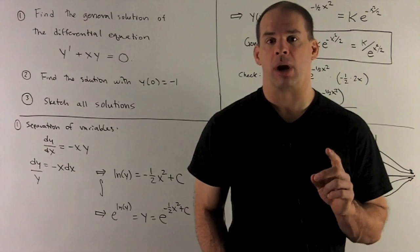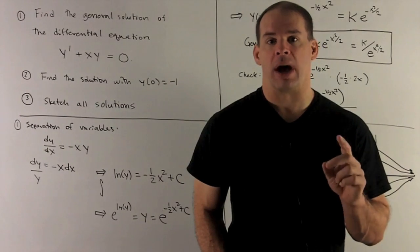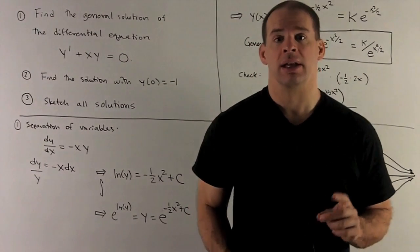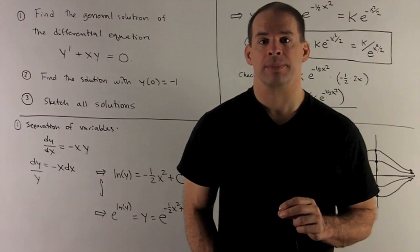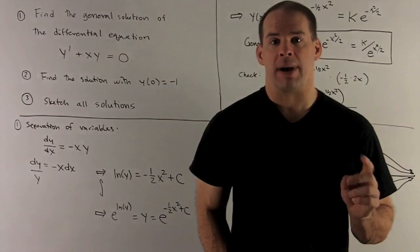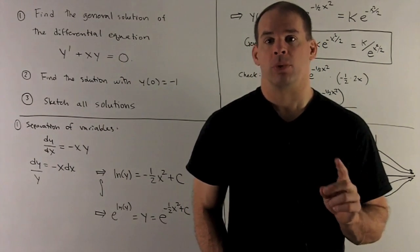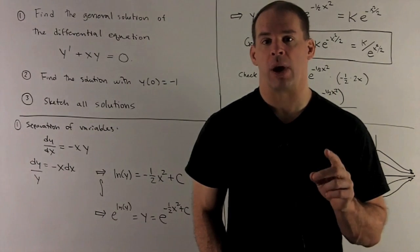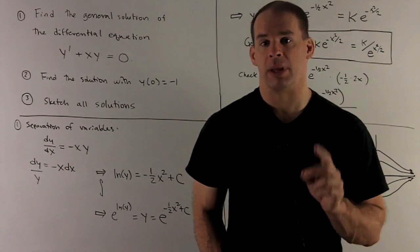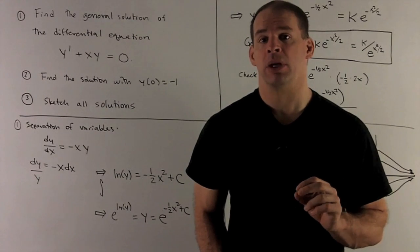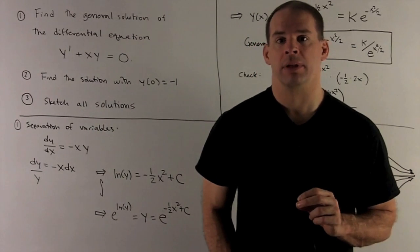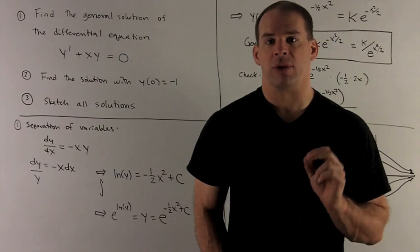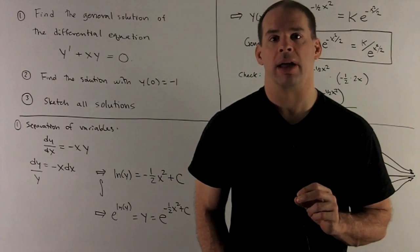I'll rewrite y prime as dy over dx and move the dx to the x side. Taking the antiderivative of both sides: the antiderivative of minus x — we add one to the exponent and flip it — gives minus x squared over two, plus a constant of integration on this side. On the other side, the antiderivative of dy over y is the natural log of y.